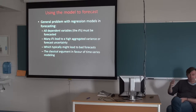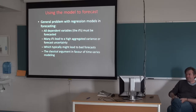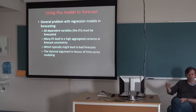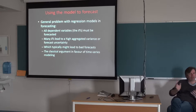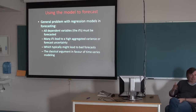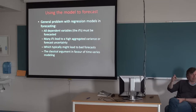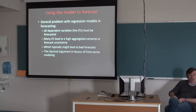Some of the X variables may be easy to forecast, but some may be very hard. As it says here, many X's lead to a high aggregated variance or forecast uncertainty. There is a mathematical theorem which says that when you add uncertainty together, it increases progressively. So what you actually do is add uncertain variables together, and if you're uncertain on some of them, you get a bigger uncertainty on your output forecast. This is perhaps the main reason why time series methods are often applied.